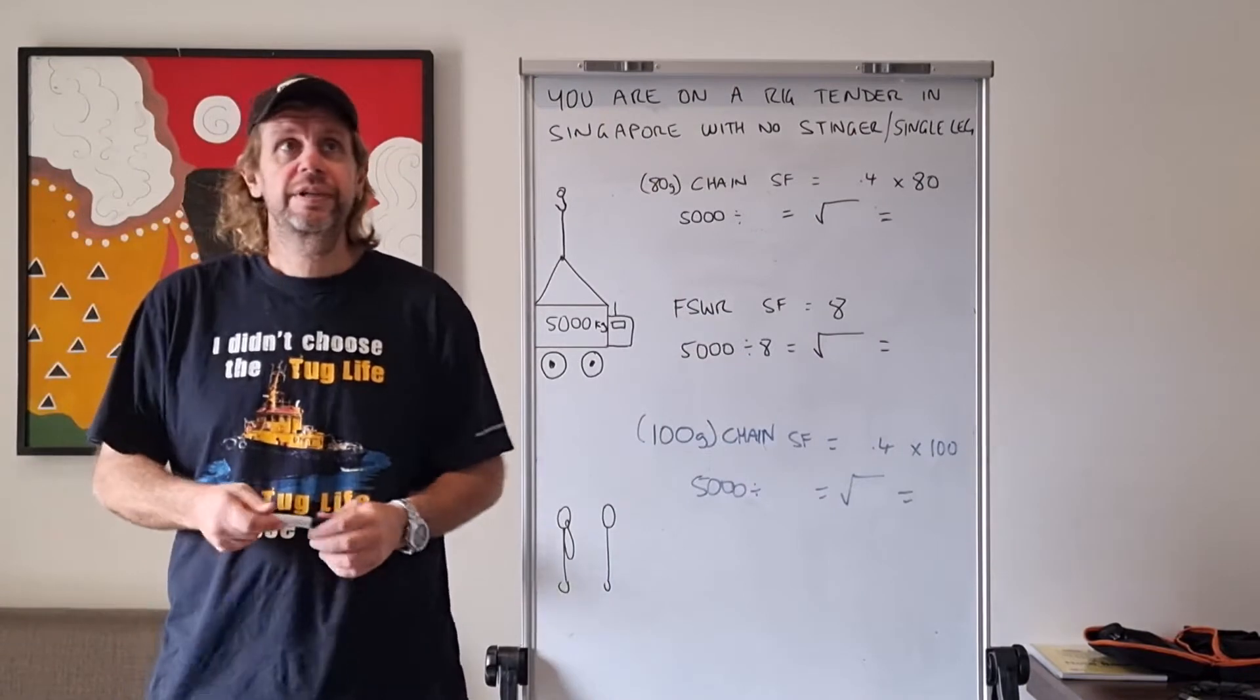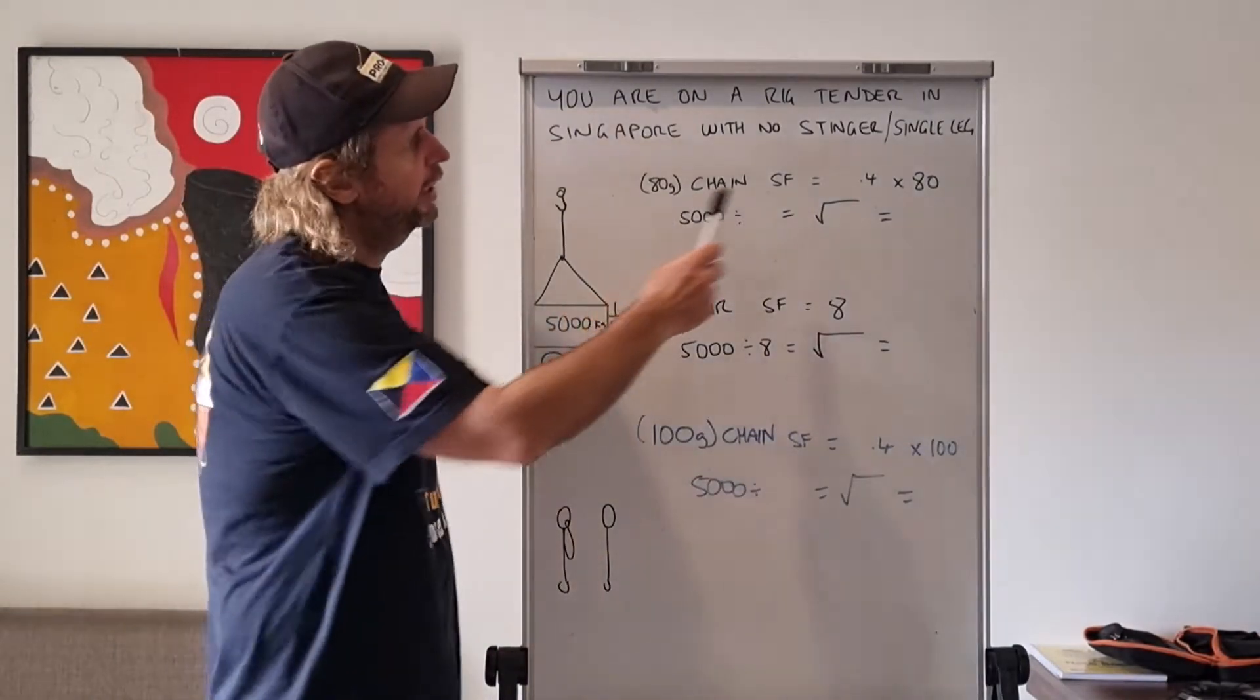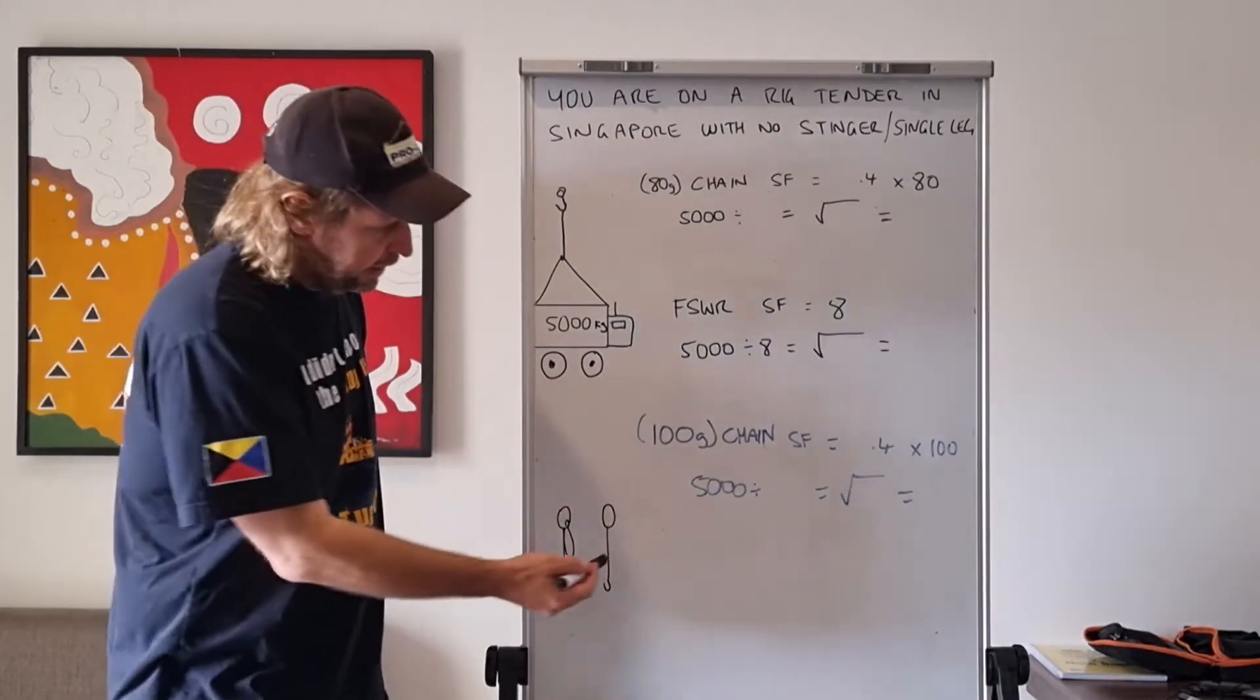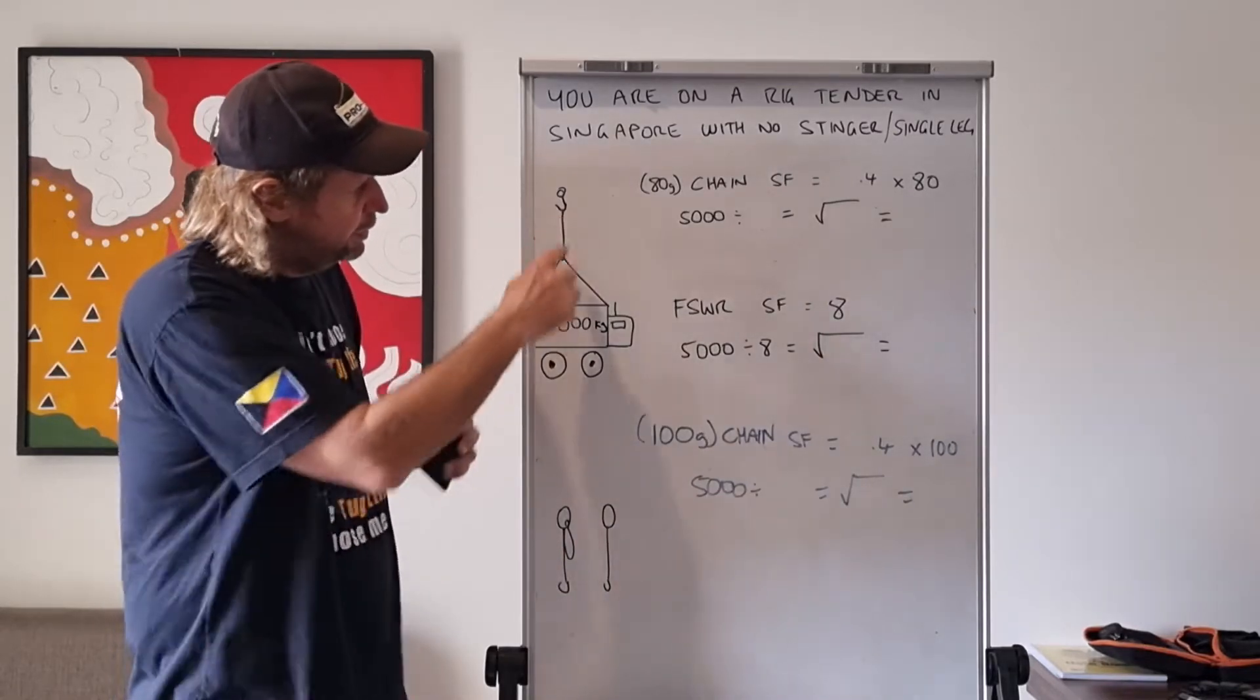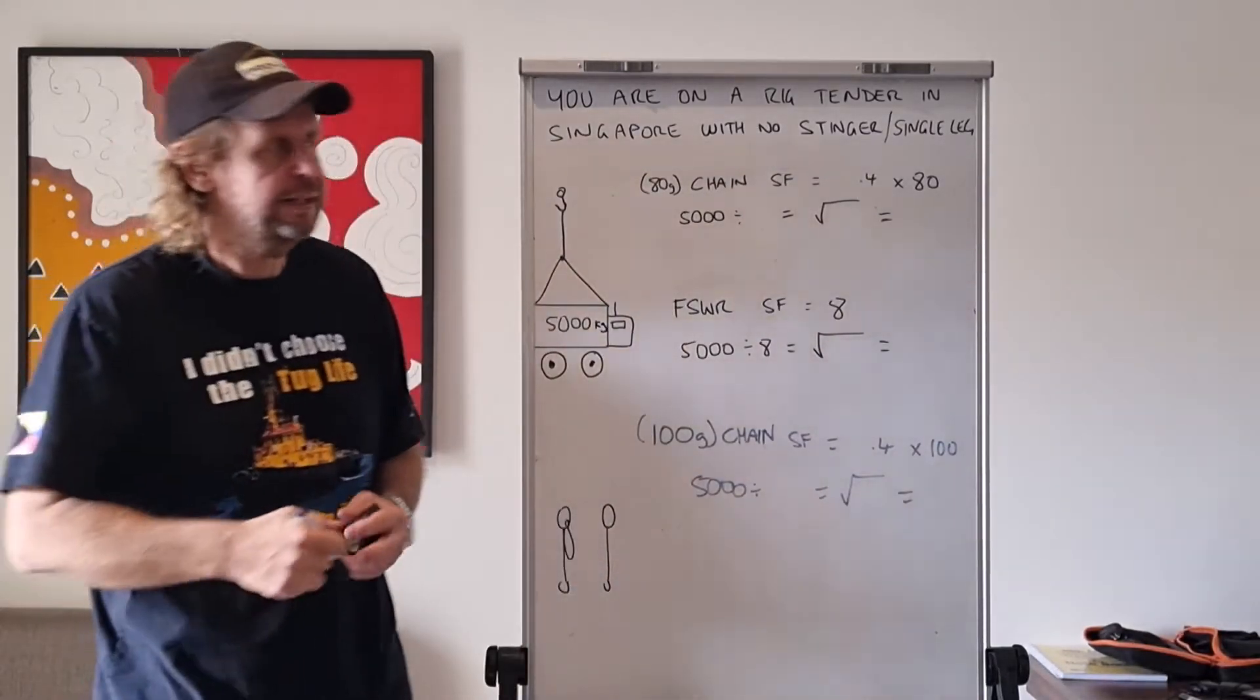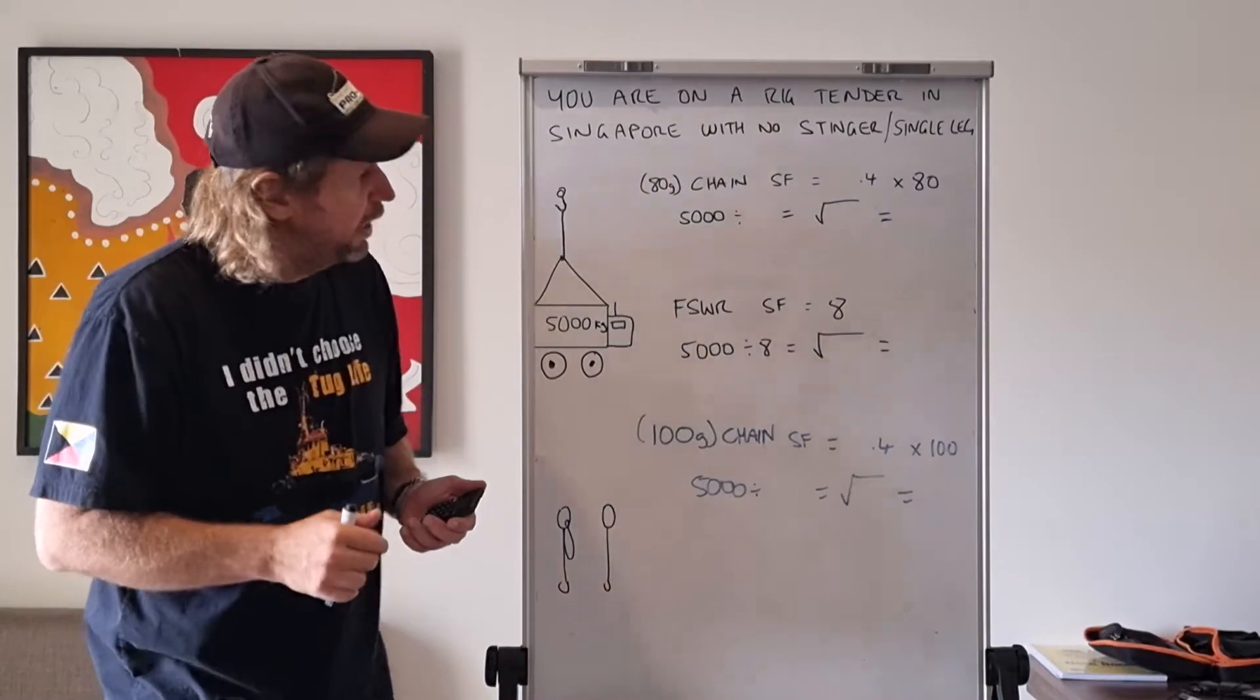Alright guys, here's a scenario. You're on a ship in Singapore and you don't have a stinger or a sling single leg. So a stinger sling single leg is one of these - it generally goes here between the hook and the load. It can be a two-legged sling with one of those hooked up, or it can be a purpose-made single sling or stinger, as we like to call them at sea.